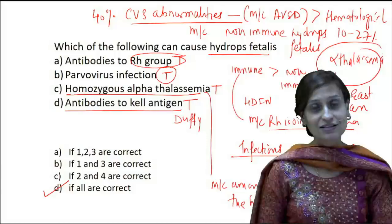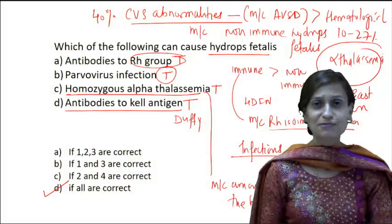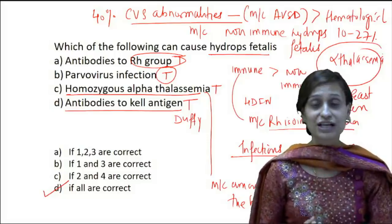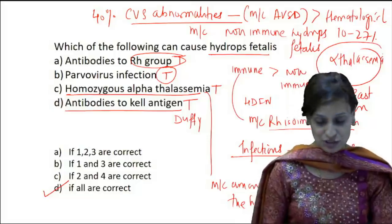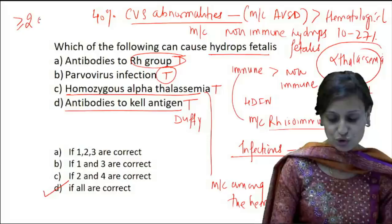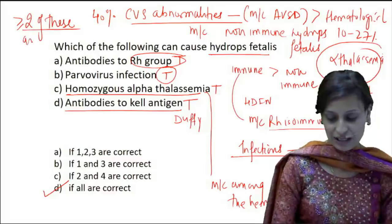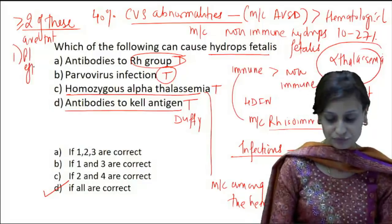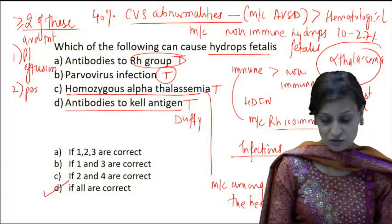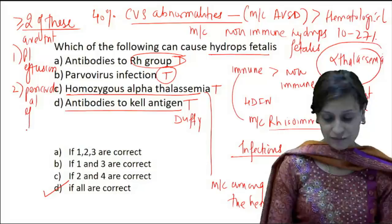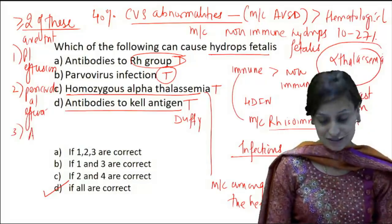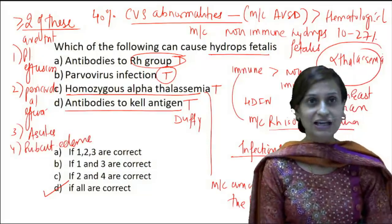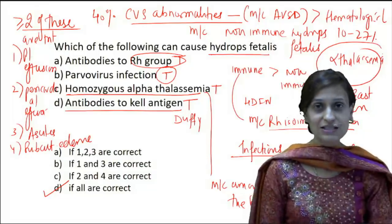It's also important to understand that hydrops fetalis is a radiological diagnosis. It is essentially a fluid collection in the subcutaneous or soft tissues and serous cavities of the baby. If two or more of the following are present, we say the baby has hydrops: pleural effusion, pericardial effusion, ascites, and subcutaneous edema.